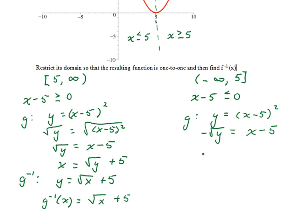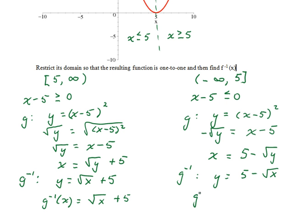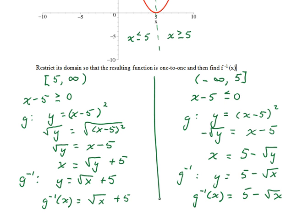So we get x equals 5 minus the square root of y. Therefore g inverse has the equation y equals 5 minus the square root of x, or g inverse of x equals 5 minus the square root of x. There are two different answers, and almost everyone generally will choose the one on the left.